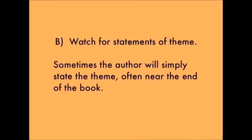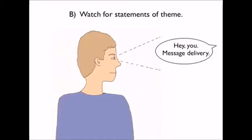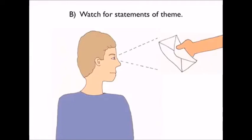B. Sometimes authors have a character just state the theme, often near the end of a book. It's often some meaningful conclusion about mankind or some aspect of life. A character might say something like, "Well, Bob, love is like that, isn't it? Sometimes it's sweet, and sometimes it's sour, but I'll take my chances." So the theme could be exactly that — that love can be pleasurable and it can be painful, but it's worth the risk. Not all books contain a statement like that, but some do, and it's worth keeping an eye out for one.